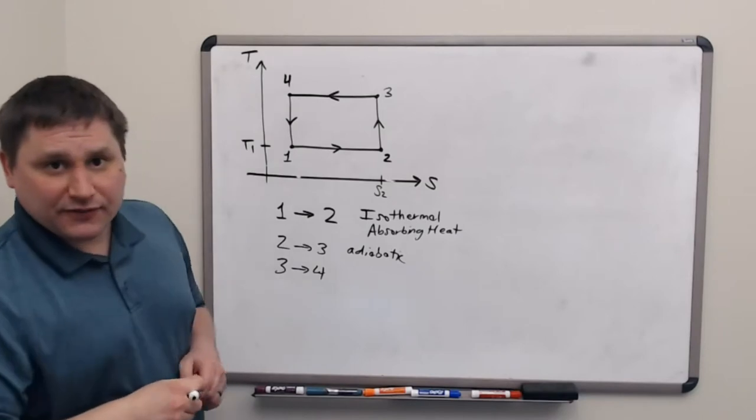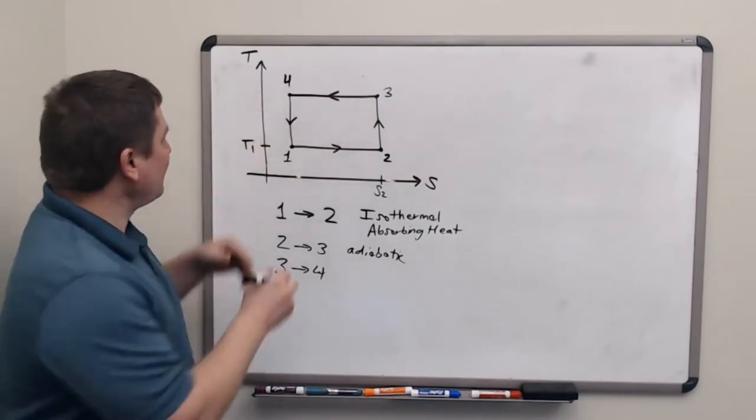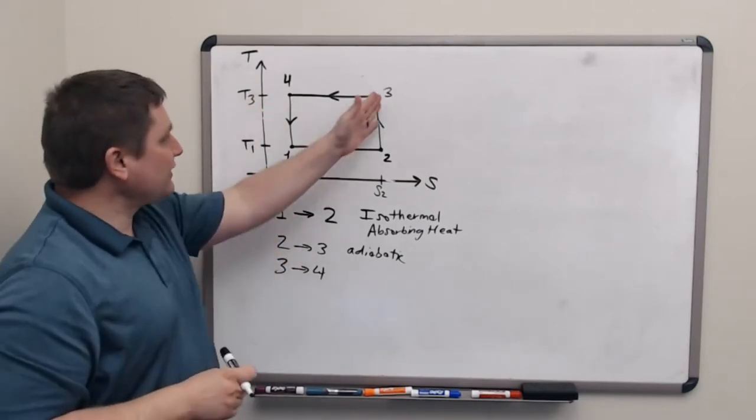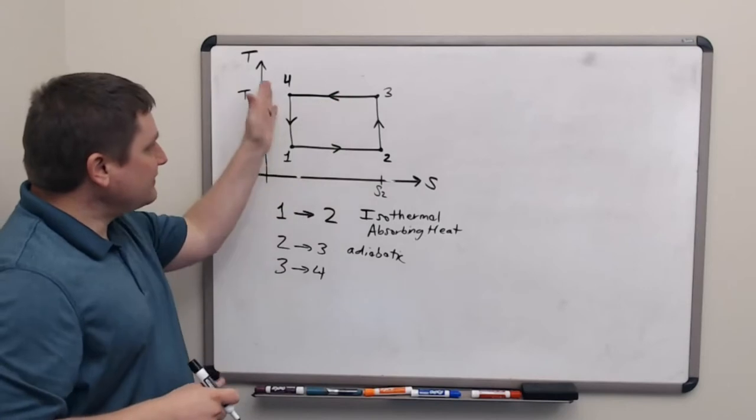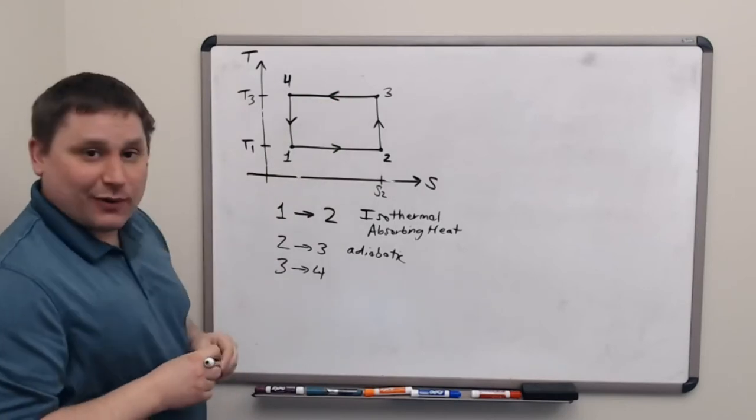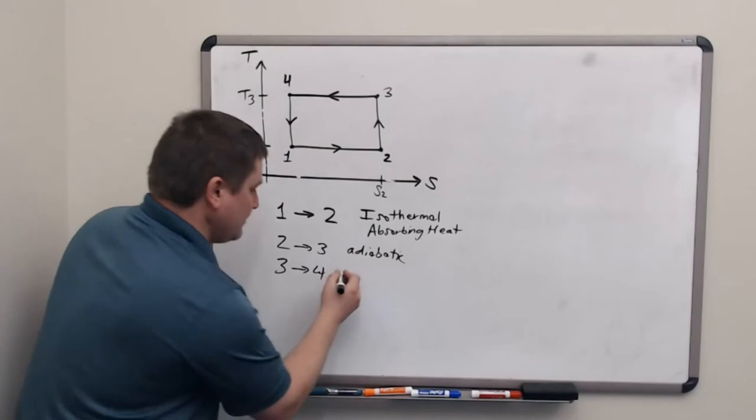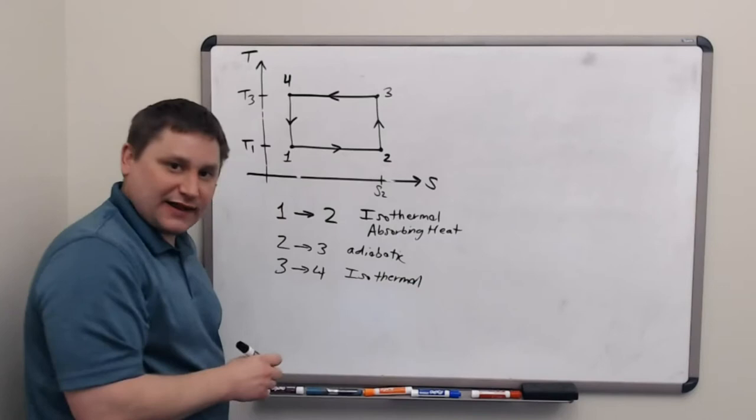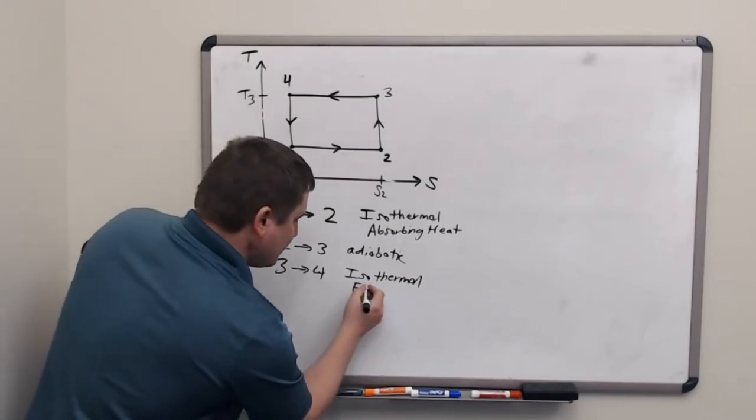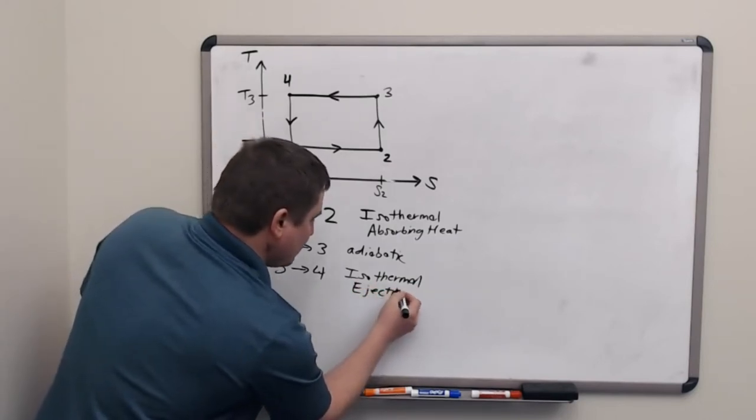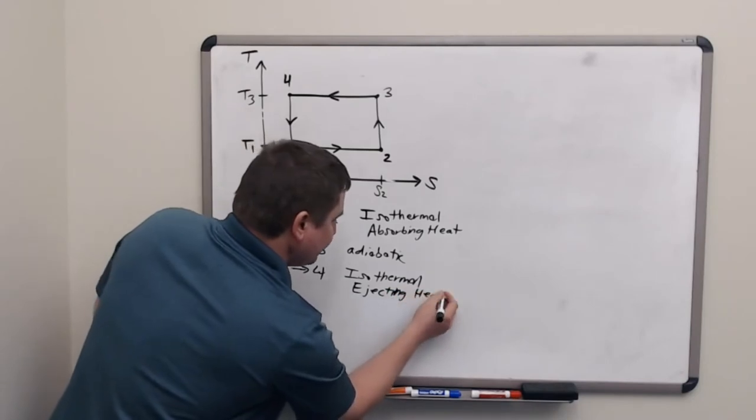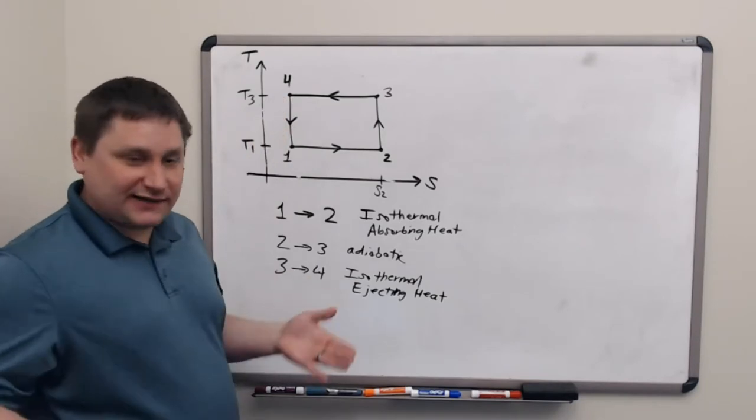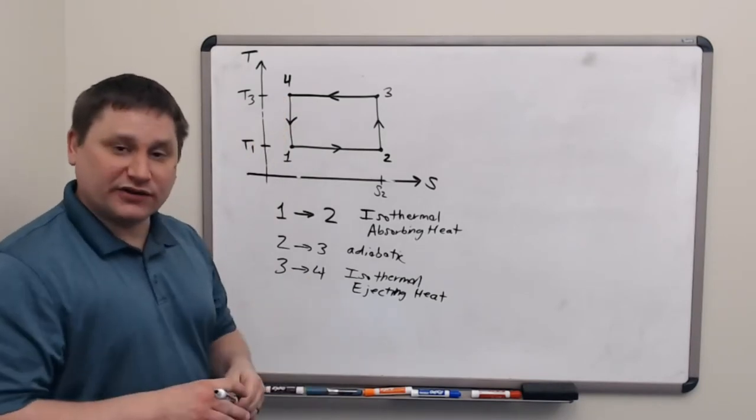From 3 to 4, we are now isothermal again at some other temperature, higher temperature T3. But we are moving to the left, we're decreasing entropy and that requires us to eject some heat. That's isothermal and we're ejecting heat. And we want to keep in mind that when we eject heat, second law states that we must be in contact with a colder reservoir to do that.